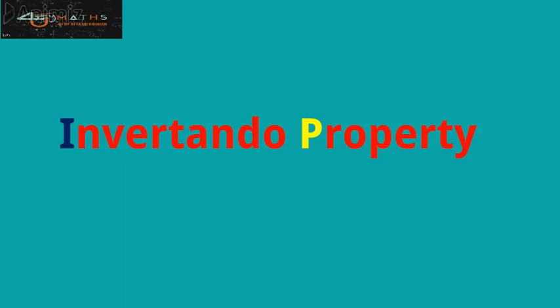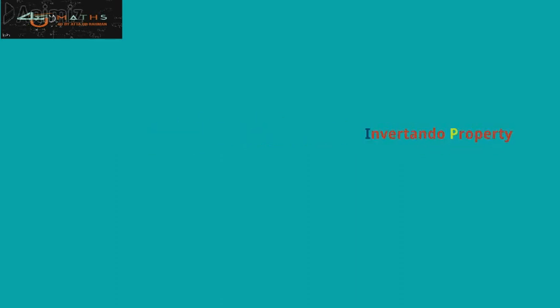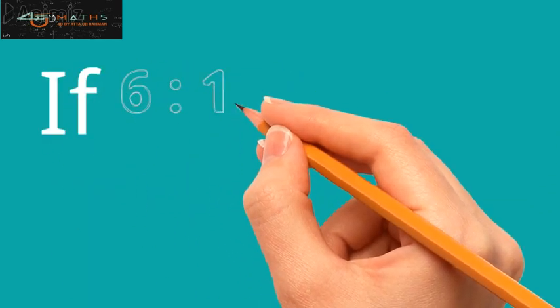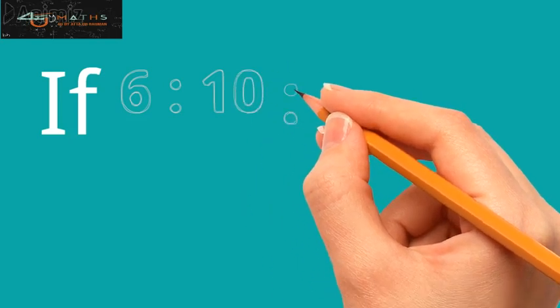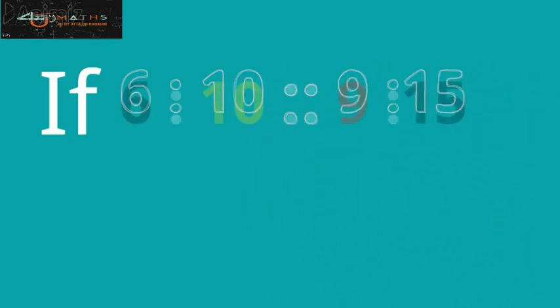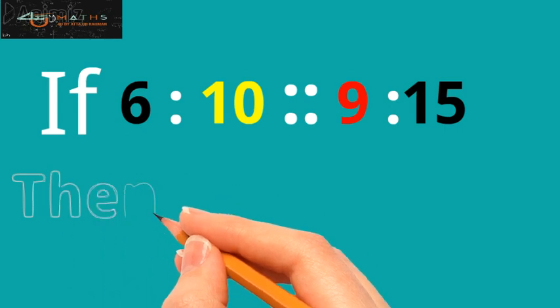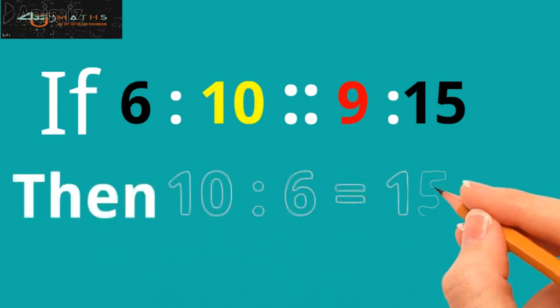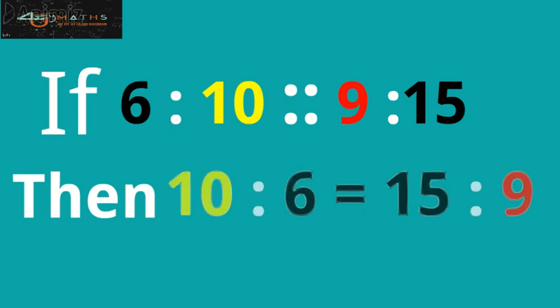Let us understand this Invertendo property with the help of an example. Suppose 6 ratio 10 is proportional to 9 ratio 15, then 10 ratio 6 is equal to 15 ratio 9.